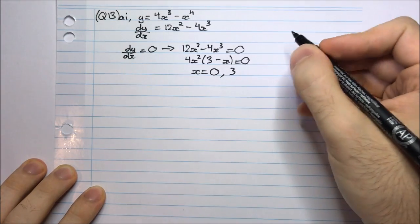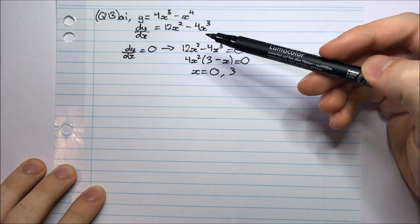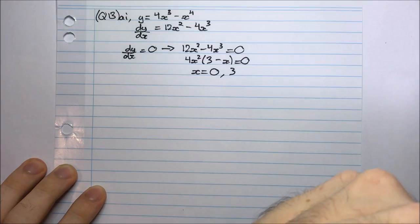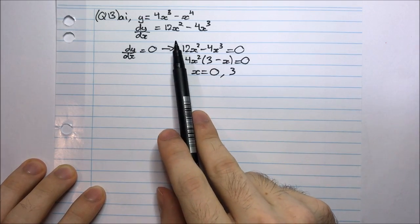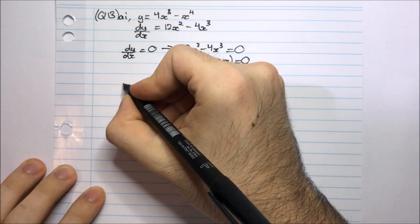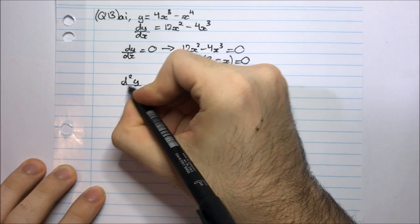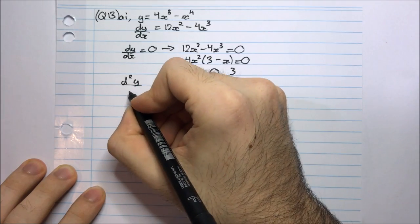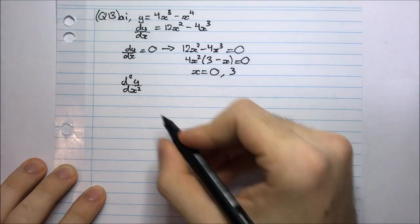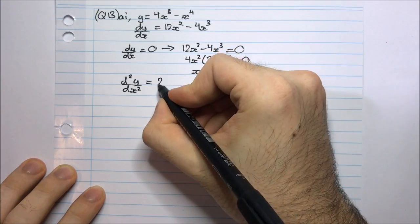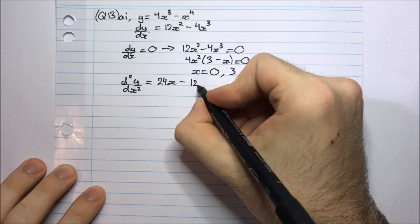To work out the nature of the stationary points, I could check either side on the first derivative, or I could go to the second derivative. Since this function is just a polynomial and not too complicated, it's a good idea to go to the second derivative instead of drawing up a table of the first derivative. So the second derivative would be differentiating this.